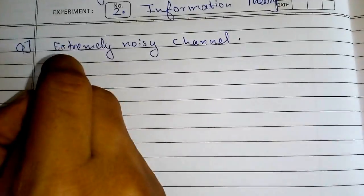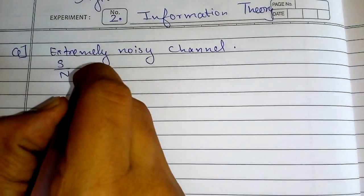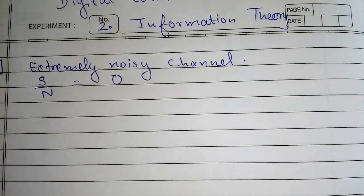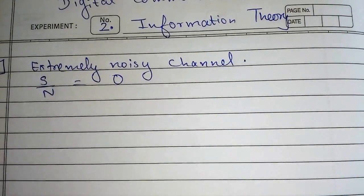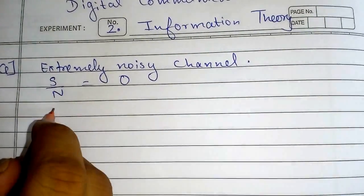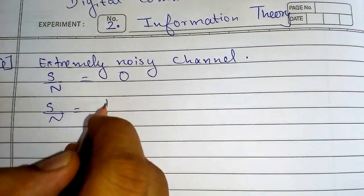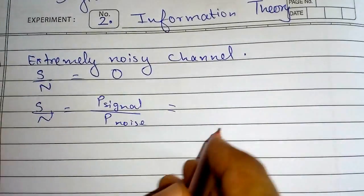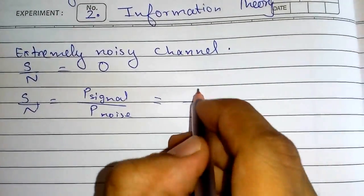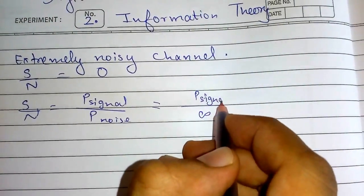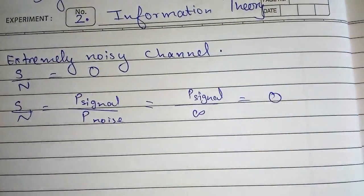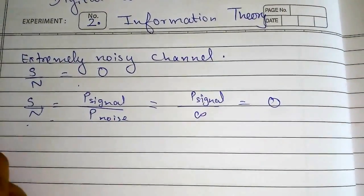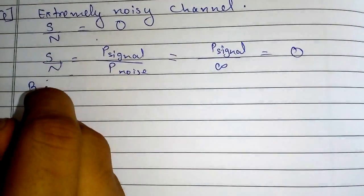Automatically, S/N equals 0, because if it has maximum noise then S/N is nothing but power of signal divided by power of noise. If my power of noise is infinite, whatever may be the power of signal, it will come out to be 0. So that is why my S/N is 0. Next, bandwidth B equals 1 kilohertz.